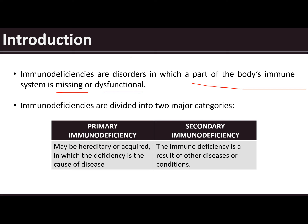Immunodeficiencies are divided into two major categories: primary and secondary immunodeficiency. When you say primary, they can be hereditary — meaning they are inherited and considered genetic — or they could be acquired, in which the deficiency is the cause of the disease.